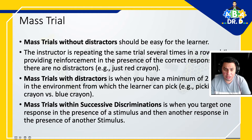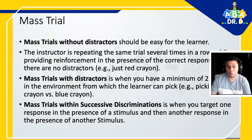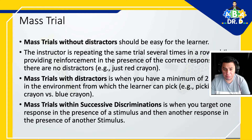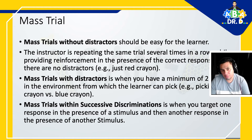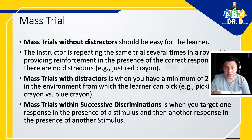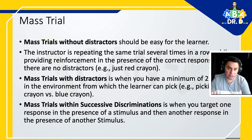There are a variety of mass trial options. You can do a mass trial without distractors, which should be easy for the learner — you're just repeating the same trial several times in a row while providing reinforcement for the correct response and there are no distractors. For example, you say 'touch red crayon' and you have the red crayon by itself, so the learner will have a high probability to touch it.